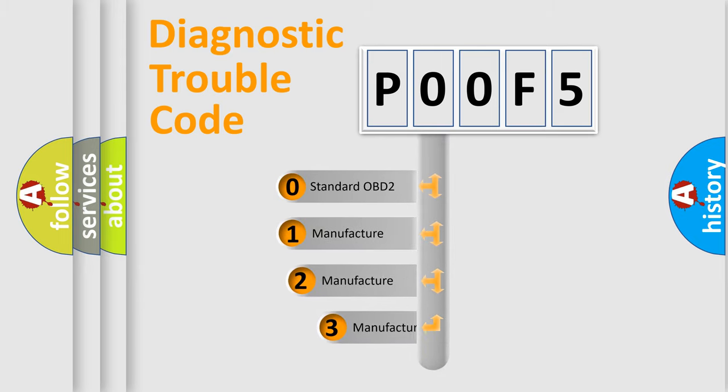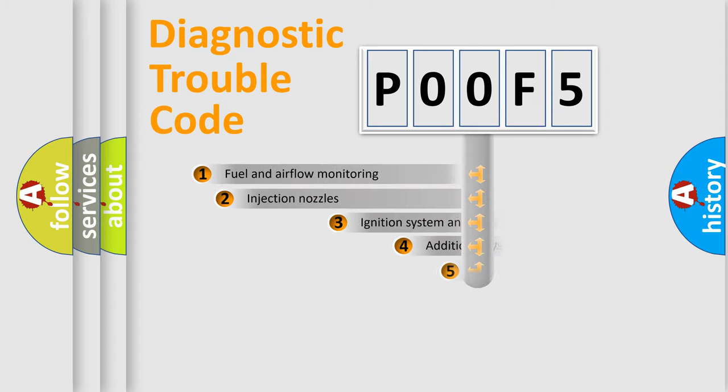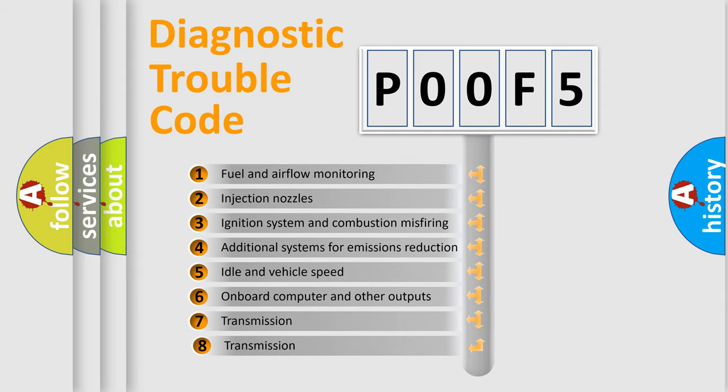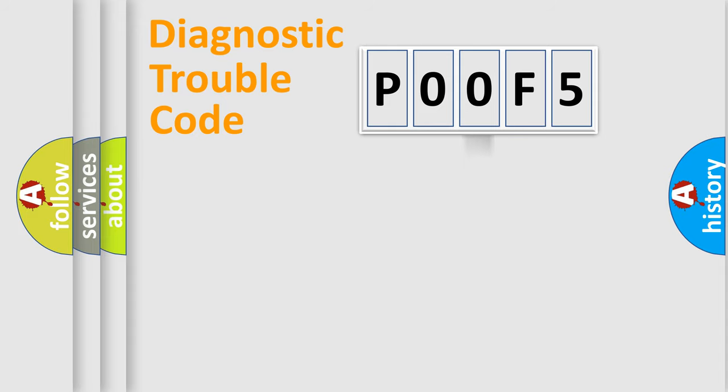If the second character is expressed as zero, it is a standardized error. In the case of numbers 1, 2, or 3, it is a manufacturer-specific expression of the car error. The third character specifies a subset of errors. The distribution shown is valid only for the standardized DTC code.